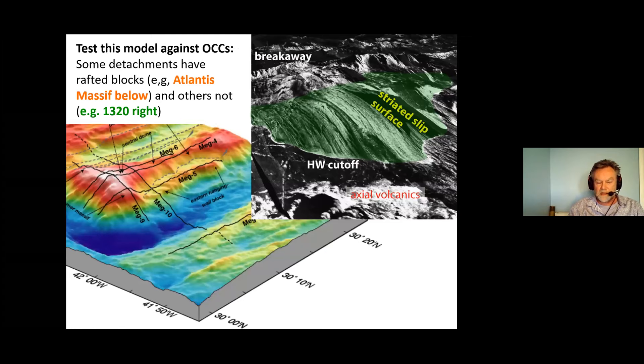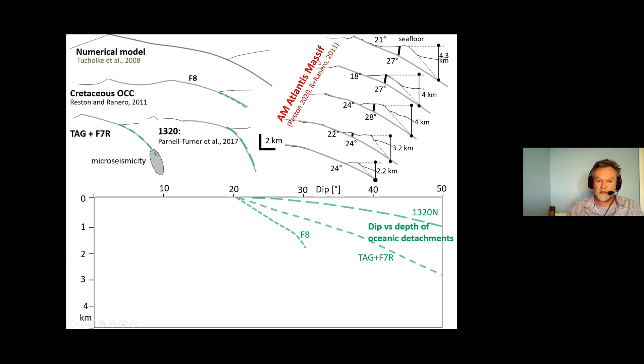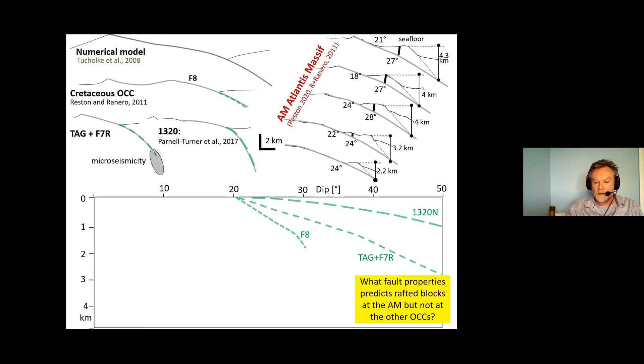Let's test this now by looking at the Atlantis Massif where we have a rafted block and where we have another oceanic core complexes where we do not. Shown in green here we've got a couple of cross sections through oceanic core complexes with no rafted blocks with the detachment constrained by seismogenic seismicity information. Over here we've got cross sections across the Atlantis Massif taken from Reston and Renero 2011 and these are the dip versus depth profiles of those three detachment systems.